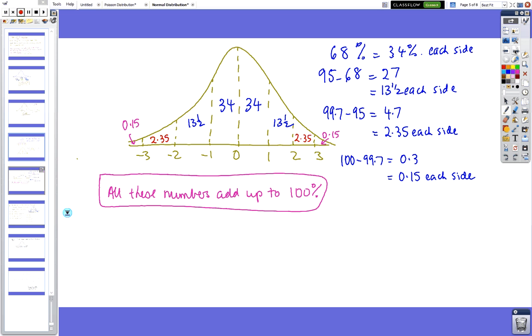We can break it up into sections. We know that this area is 68%, so I can split it up into two 34s. Then 95 minus 68 equals 27, so there's 13.5 there and 13.5 there. Then 99.7 minus 95 equals 4.7, so we've got 2.35 and 2.35. Then we've only got 0.3% split, so 0.15 and 0.15. When you add up all these numbers, you get 100%.